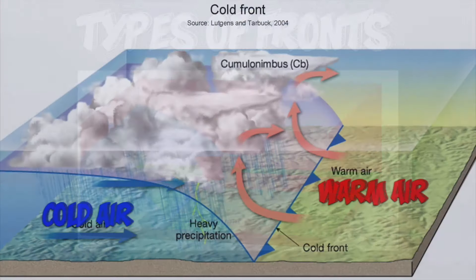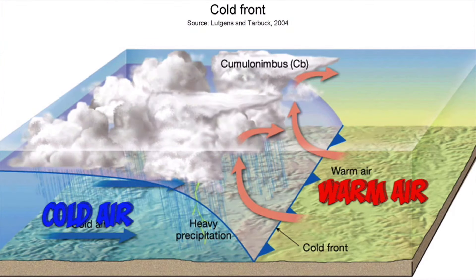Looking at it another way in this diagram, cold air is on your left and warm air is on your right, showing how the cold air is wedging itself underneath the warm air.